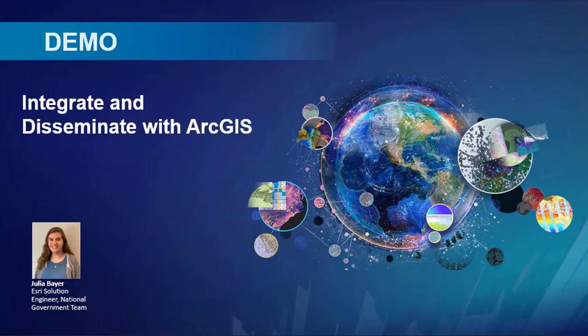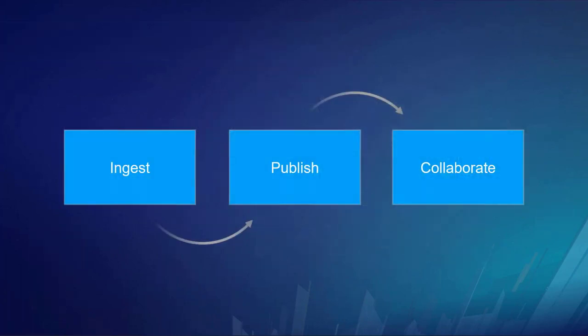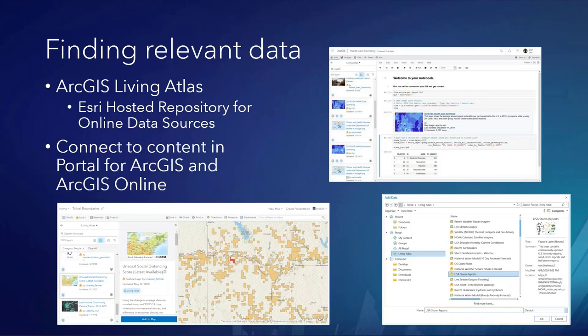I'm going to share my screen and talk about how we integrate and disseminate information with ArcGIS. My presentation today will focus on how we start by ingesting data, publishing it, and then collaborating with our data and information products. When working with information from the ArcGIS Living Atlas of the World, we have a repository of hosted and authoritative data to work with. Just by typing in something like 'wildfires,' you can easily add it to your content — whether in a web GIS environment like ArcGIS Online, the desktop environment ArcGIS Pro, or with ArcGIS Notebooks.